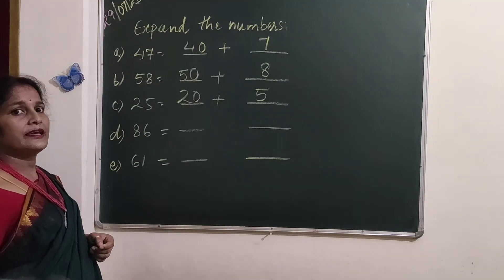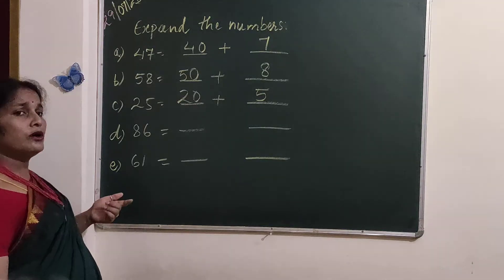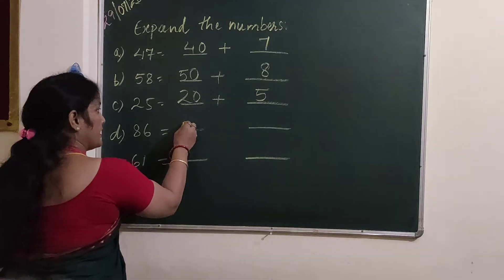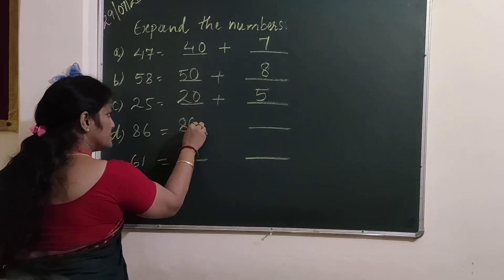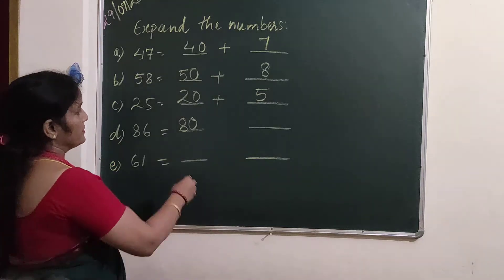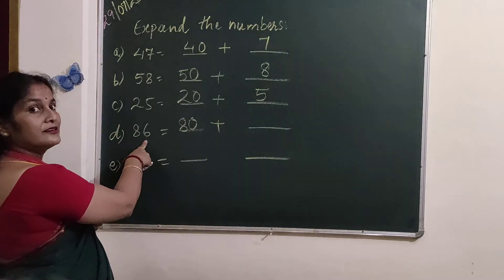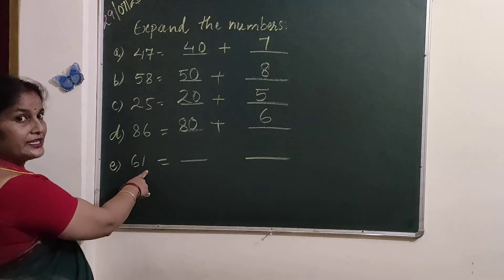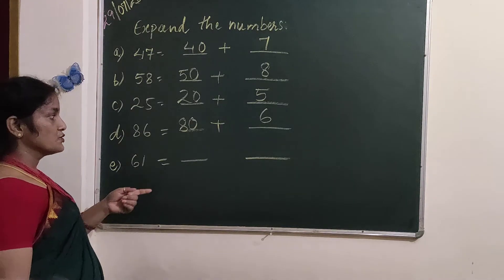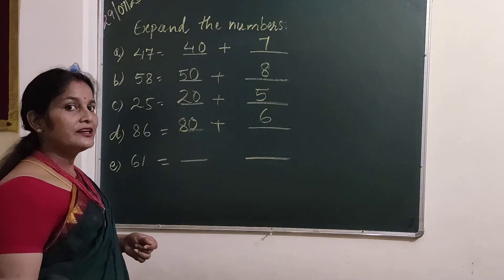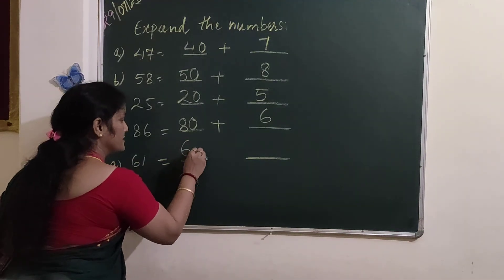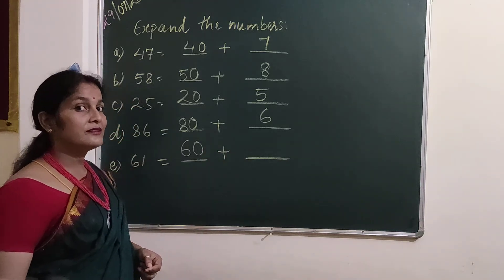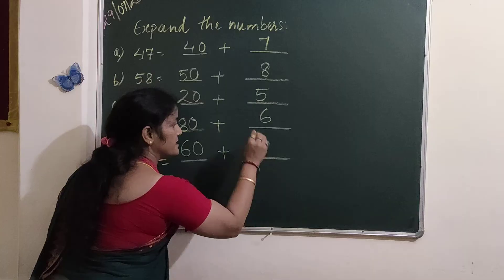What is this? 86. So what I have to write here? 80. Shabash. And plus sign. And here? 6.